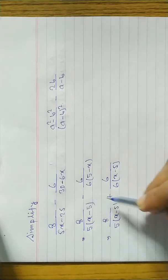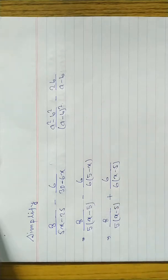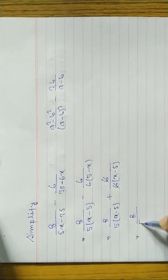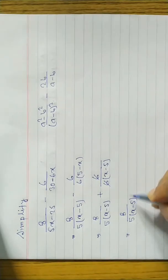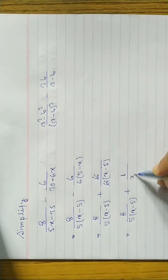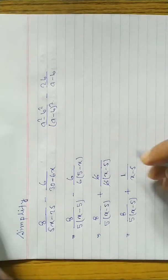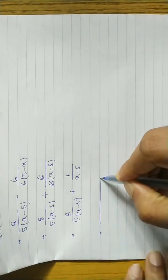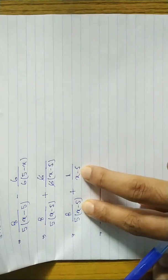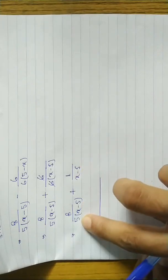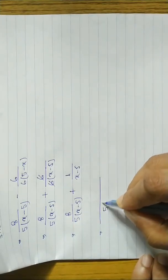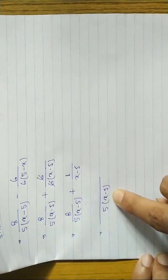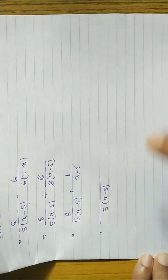When we interchange the two terms to make them the same — x minus 5 and x minus 5 — we take minus common, so the plus becomes minus and minus becomes plus; we change the signs. Now the 6 and 6 cancel, leaving 8 by 5(x minus 5) plus 1 by (x minus 5). Now we take the LCM. The common factor is x minus 5, and the LCM is 5(x minus 5).